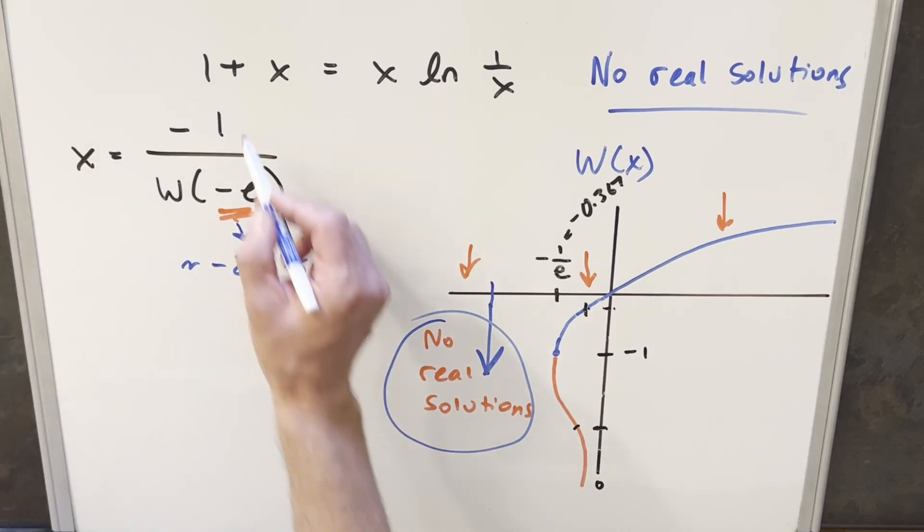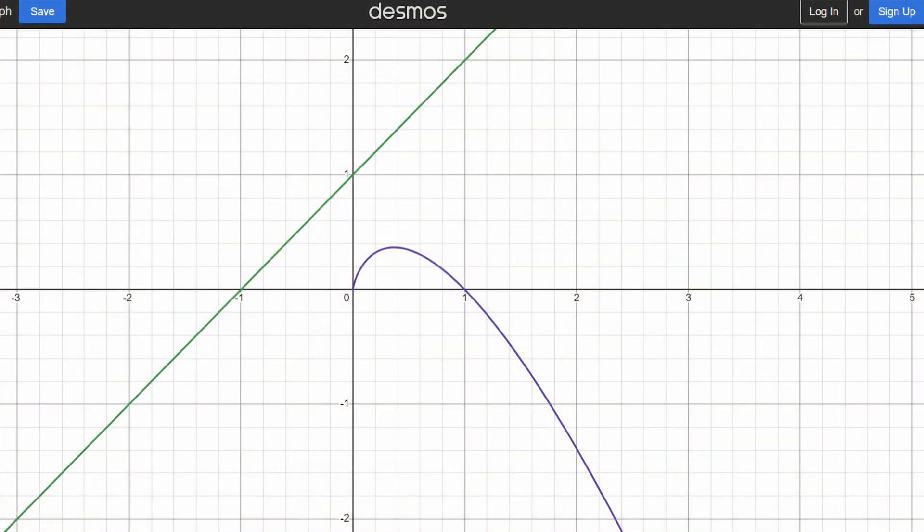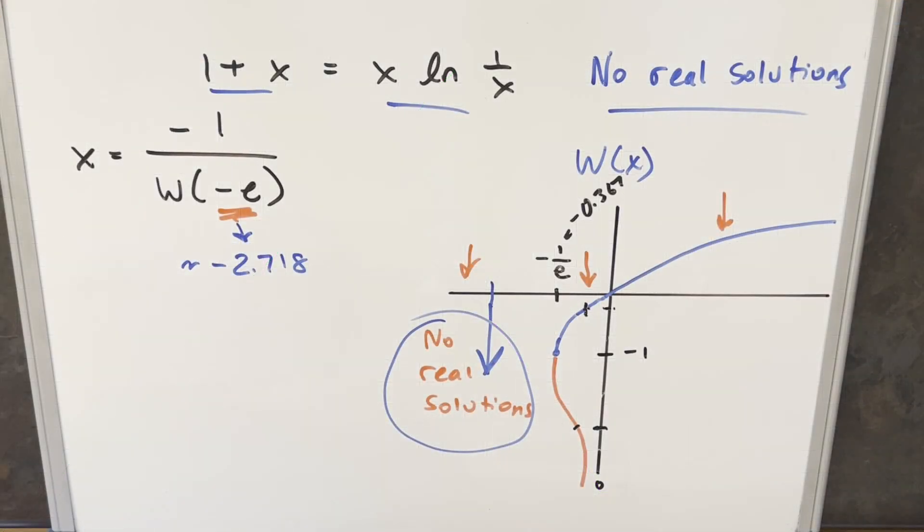You could also see this clearly, if you do look at a graph, you graph these separately, you'll see there's no intersection point between these two curves. So that's kind of another way to do this. Now, you may actually be wondering about the complex solutions, and you can find those on Wolfram Alpha.